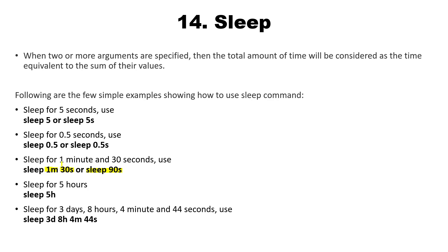We don't have to write sleep 90s — we can write sleep 1m 30s and it works perfectly fine. Here are some examples: sleep 5 or sleep 5s both pause for 5 seconds; sleep 0.5 or sleep 0.5s both pause for half a second; sleep 1m 30s or sleep 90s are equivalent. For hours: sleep 5h. We can also combine suffixes like sleep 3d 8h 4m 44s, and the total time will be the sum of all those arguments.